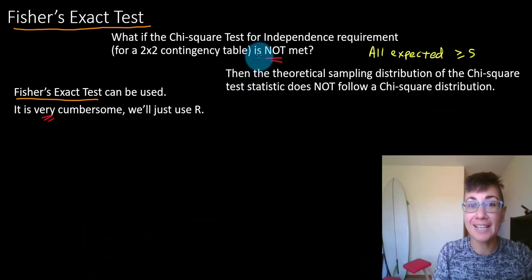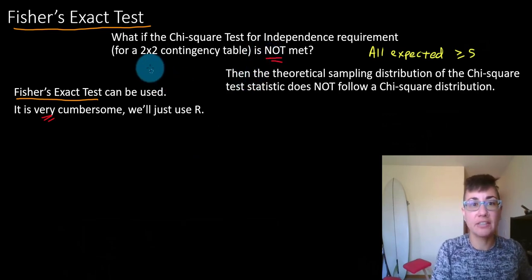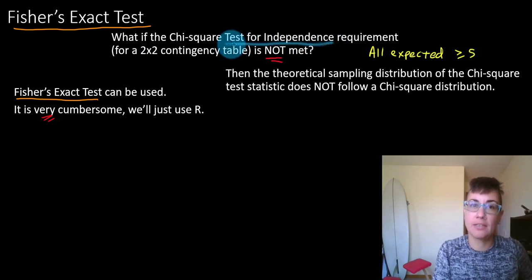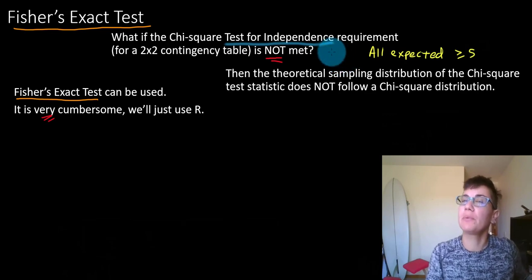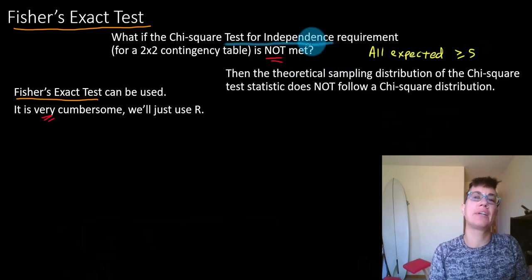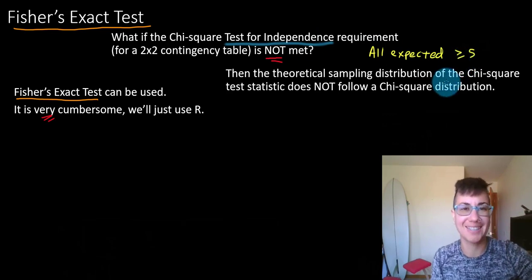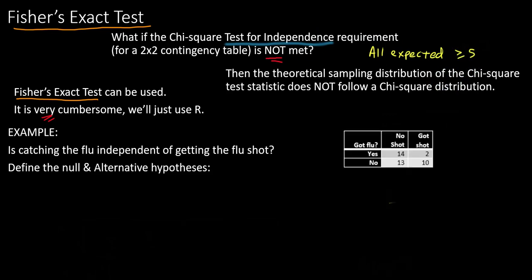So Fisher's exact test is particularly for a test for independence, and typically we'd want to use the chi-square test there, but if this requirement is not met, Fisher's exact. Let's jump into an example. You know how I like to do. Here I've got some sample data.